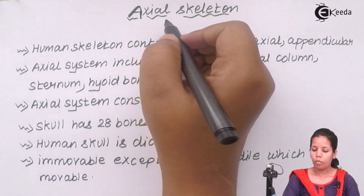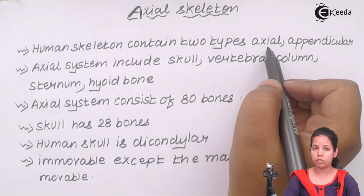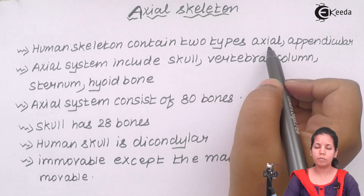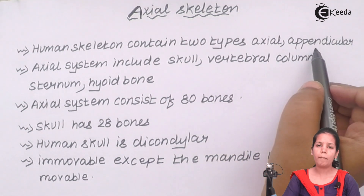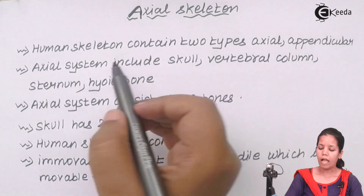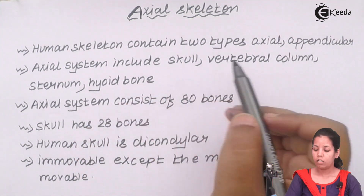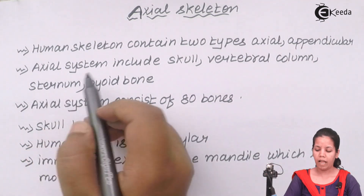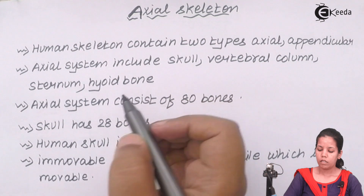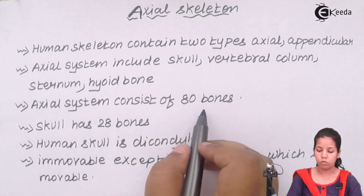The human skeletal system is differentiated into two groups: the axial skeleton and the appendicular skeleton. The axial skeletal system includes the skull, vertebral column or spinal cord, sternum, and hyoid bones. The axial system in totality consists of 80 bones.